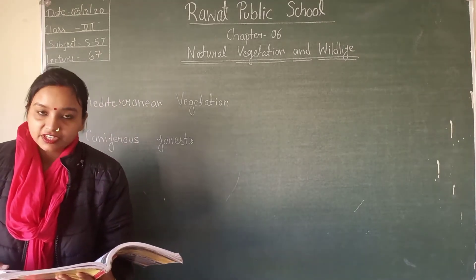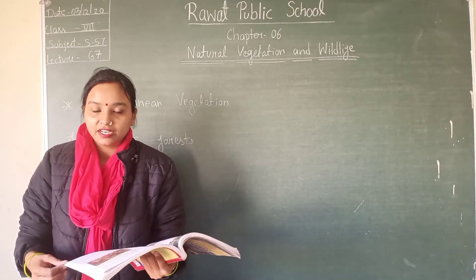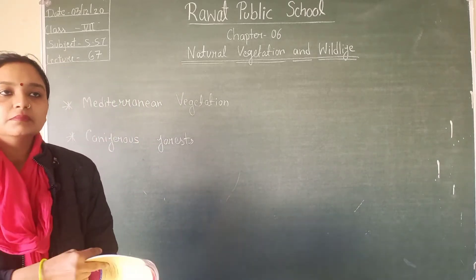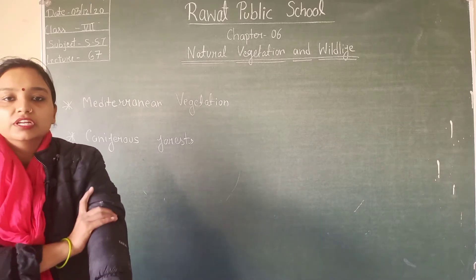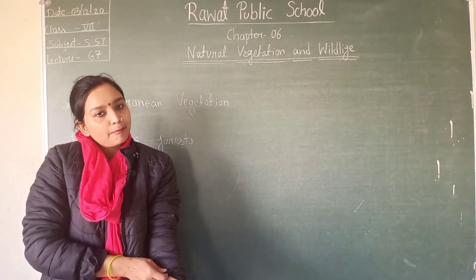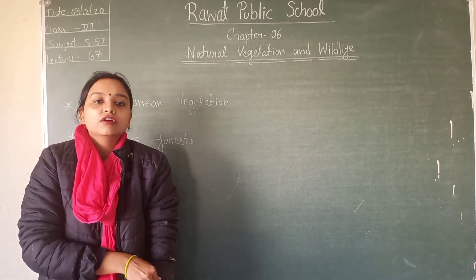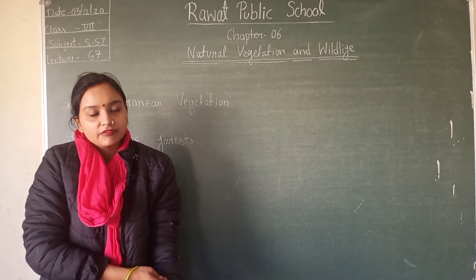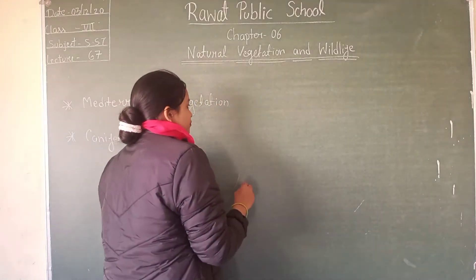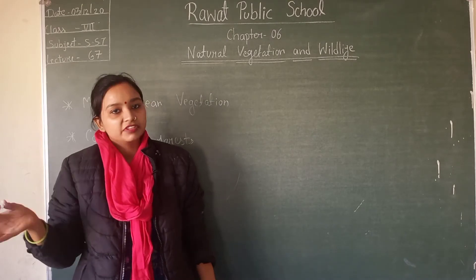Let's start with Mediterranean vegetation. Open page number 139. Mediterranean vegetation is named after the Mediterranean Sea and the climate located in the area of the Mediterranean Sea — just as we call it Arabian vegetation near the Arabian Sea.